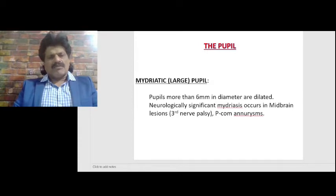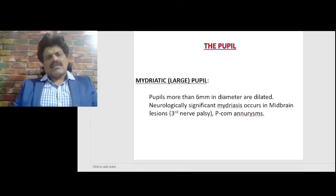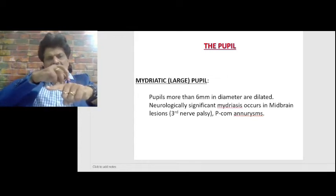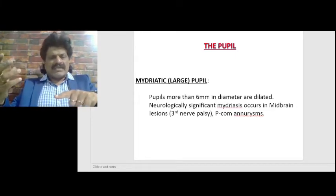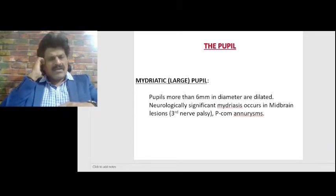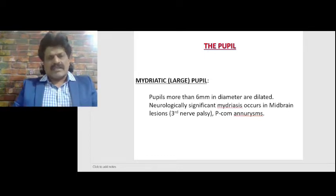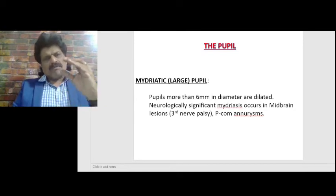Now let us see the large pupil. Pupils more than 6 millimeters in diameter are dilated, and we call these mydriatic pupils. The neurologically significant mydriasis occurs in midbrain lesions, that is third nerve palsy, and in posterior communicating artery aneurysms. The parasympathetic fibres run superficially on the third nerve. So when the third nerve gets affected — such as in uncal herniation or posterior communicating artery aneurysms — the superficial parasympathetic fibres are the first to get affected. Since parasympathetic causes constriction, when it is affected the pupils are dilated.